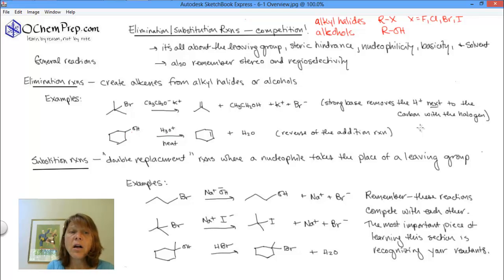Now, if we have an alcohol, we're going to treat this with a trace of strong acid, H3O plus, and we need to heat it up. And what gets eliminated is the H and the OH. And so, this is actually the reverse of the addition reaction we learned with the alkenes.